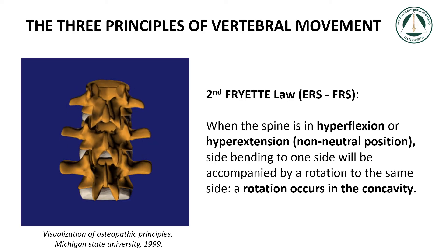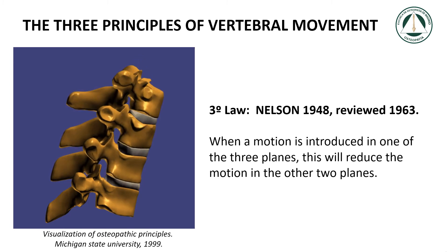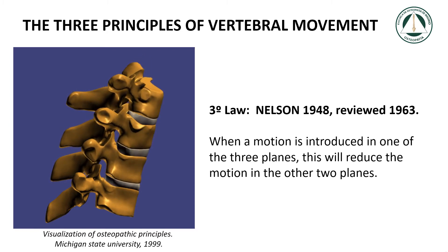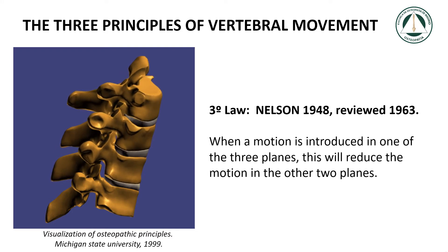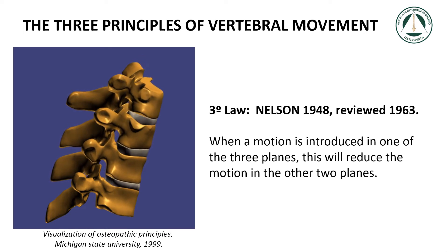Second Freyette law: ERS and FRS. When the spine is in hyperflexion or hyperextension — a non-neutral position — side bending to one side will be accompanied by a rotation to the same side. A rotation occurs in the concavity. There is also a third principle, enunciated by Freyette in 1963, based on Nelson's 1948 writings: when motion is introduced in one of the three planes of the spine, this will reduce the range of motion in the other two planes.